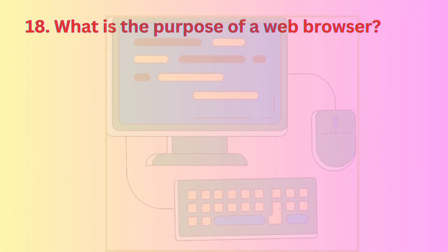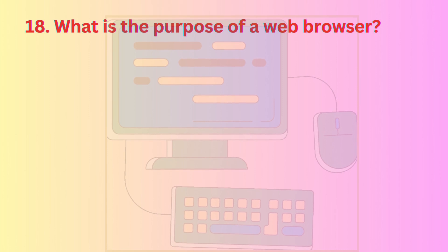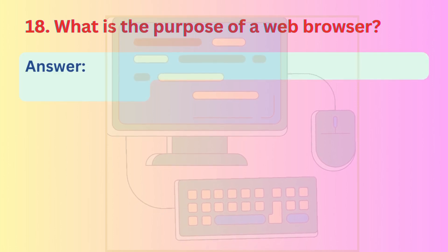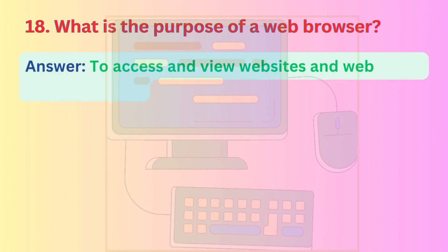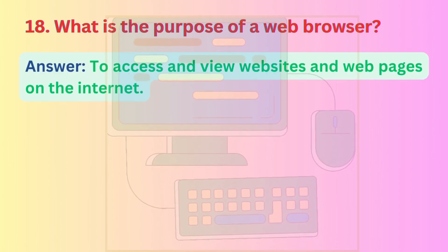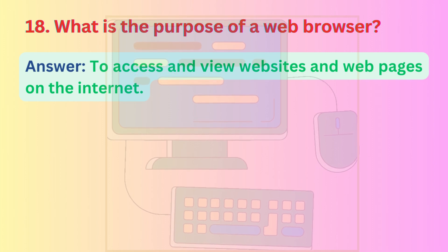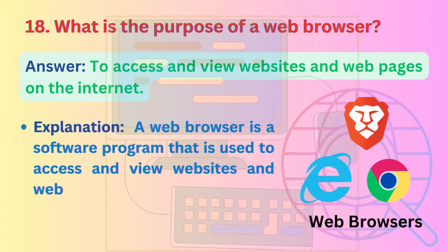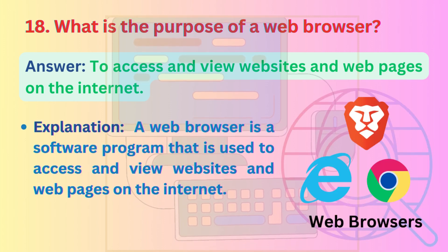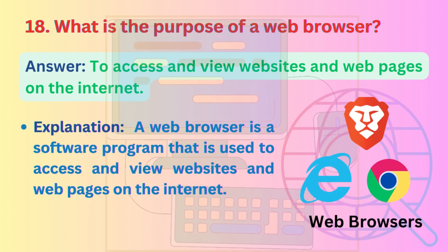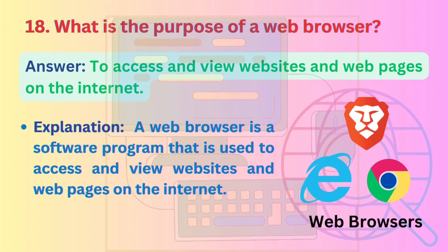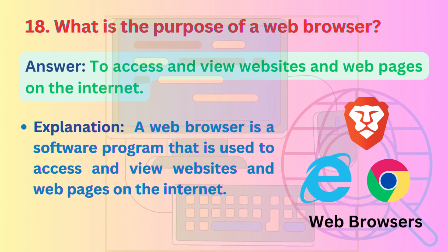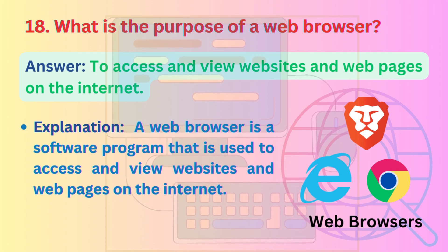Question 18: What is the purpose of a web browser? Answer: To access and view websites and web pages on the internet. Explanation: A web browser is a software program that is used to access and view websites and web pages on the internet.